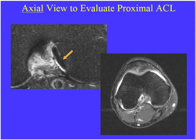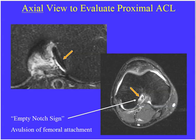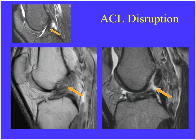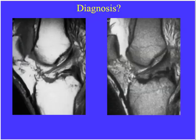They may show high signal in the expected location of that oval black structure — this represents an avulsion of the ACL from the femoral attachment site, referred to as the empty notch sign. Other findings include complete mid-substance disruption — if you see an amorphous appearance or high signal traversing the ACL fibers, that's a disruption. More commonly, they'll show bony abnormalities associated with ACL disruption and want you to make the diagnosis based on osseous findings.